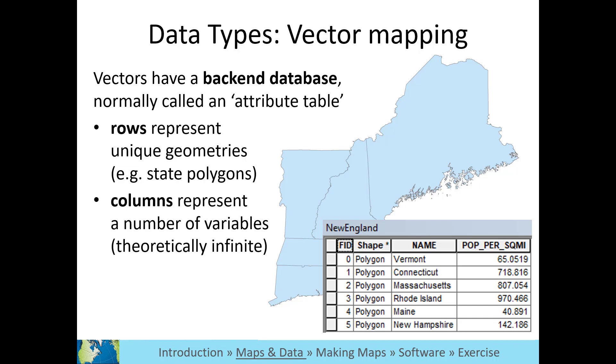Each column is a different piece of information about that feature. In this example, there's information about the state name and the population per square mile.